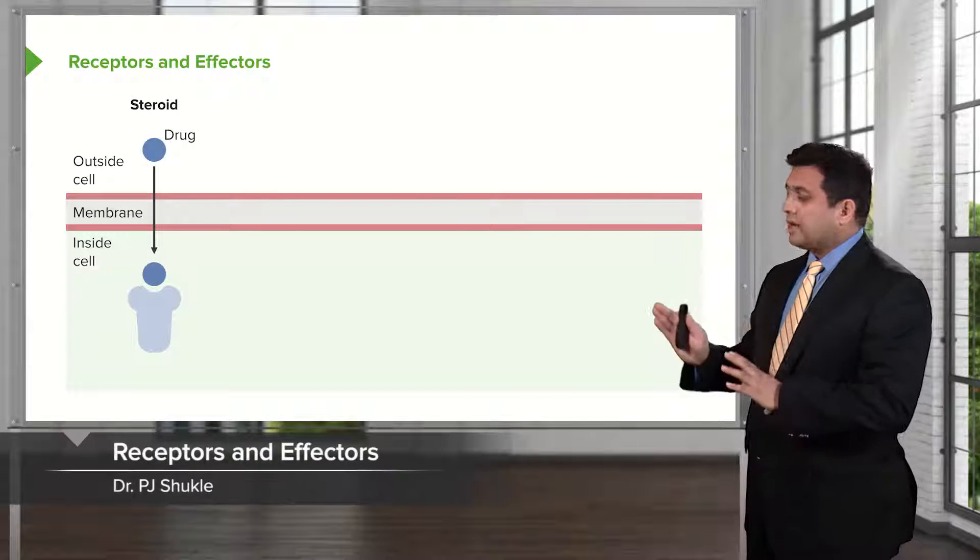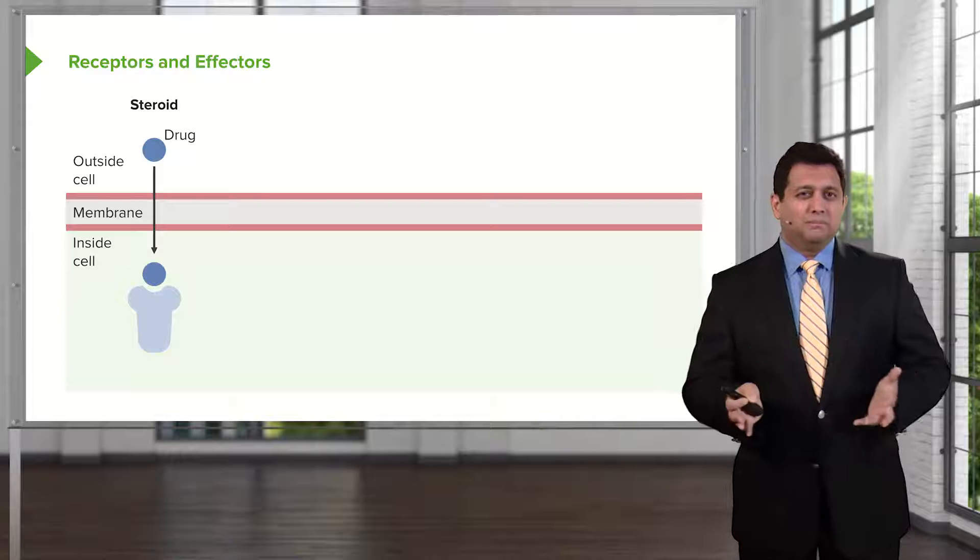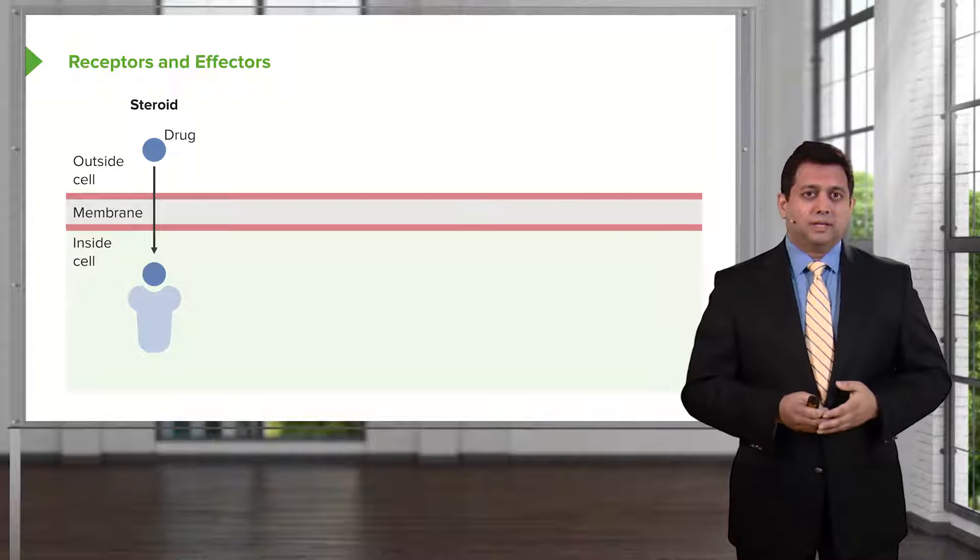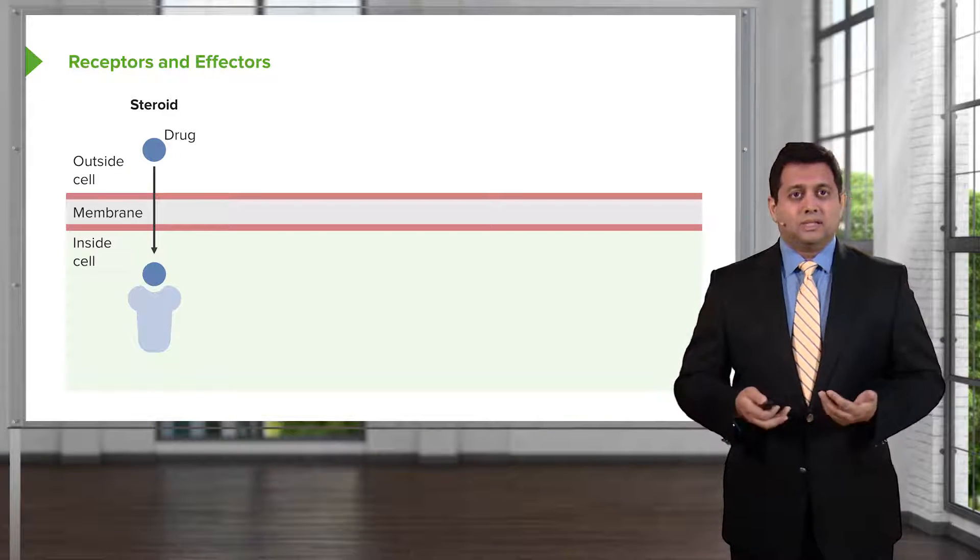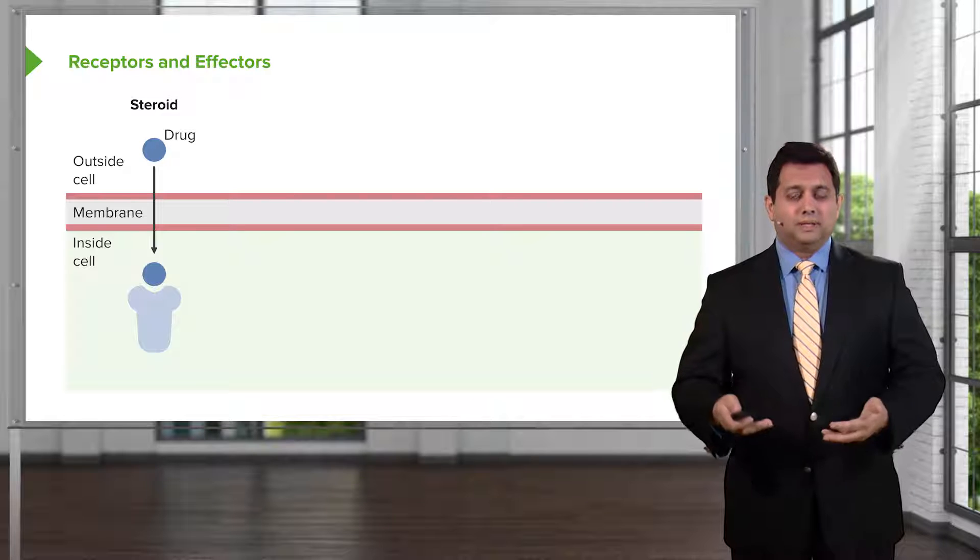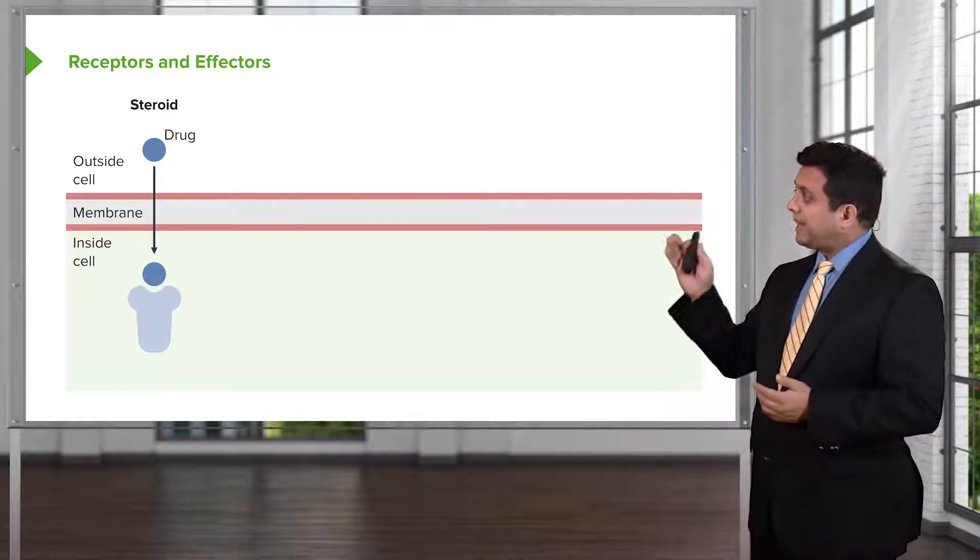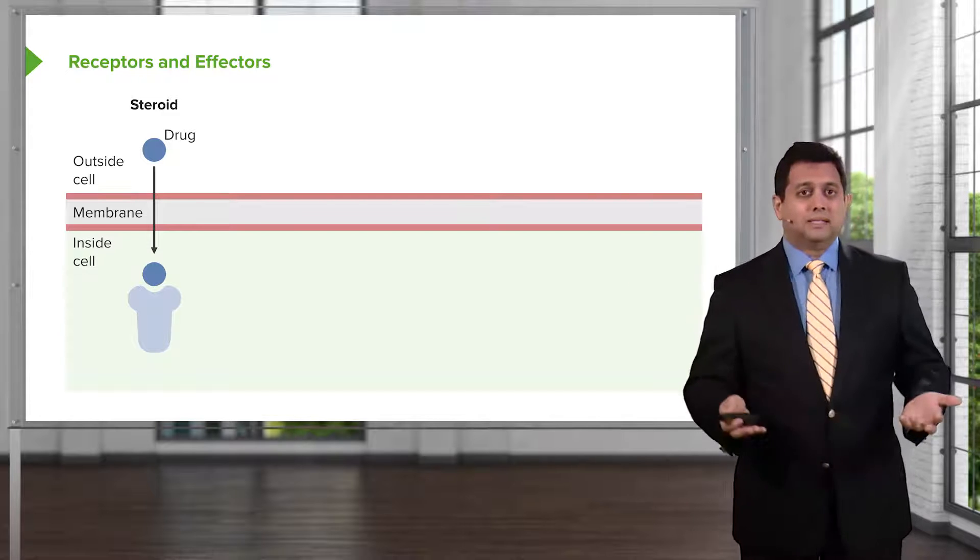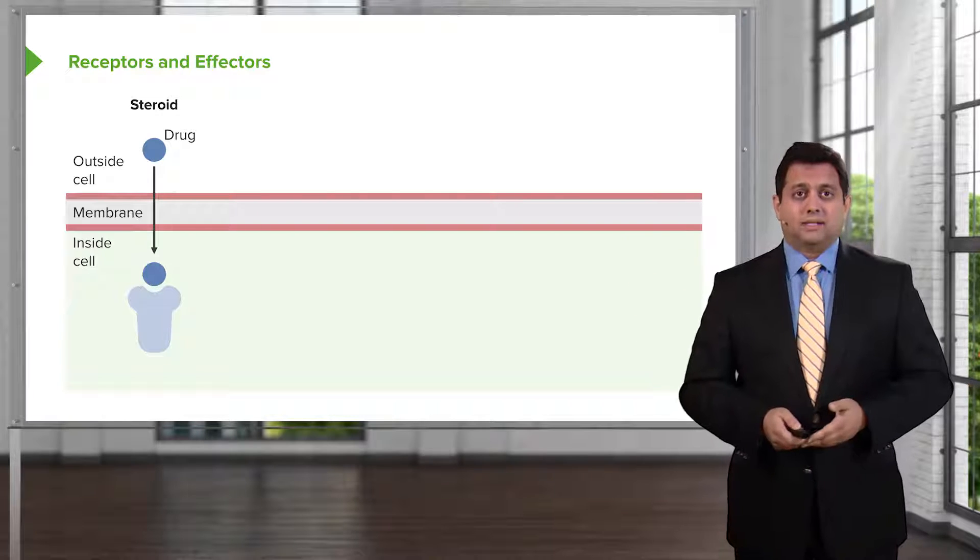Let's talk about the different kinds of receptors and effectors that are in the body. The first most simple kind of receptor-effector combination is the steroid drug interaction. A steroid is a lipophilic molecule. It will pass through the membrane because it's lipophilic, and the receptor is somewhere on the inside of the cell.